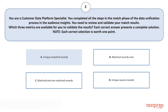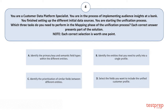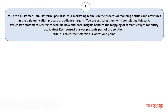The correct answers are Option B, C, and D. Question number four: You are a Customer Data Platform Specialist implementing Audience Insights at a bank. You finish setting up the different initial data sources and are starting the unification process. Which three tasks do you need to perform in the mapping phase? Option A: Identify the primary keys and semantic field types within the different entities. Option B: Identify the entities that you need to unify into a single profile. Option C: Identify the prioritization of similar fields between different entities. Option D: Select the fields you want to include in the unified customer profile. The correct answers are Option A, B, and D.